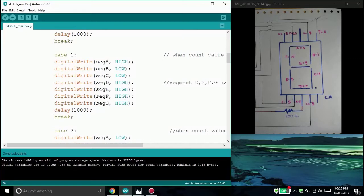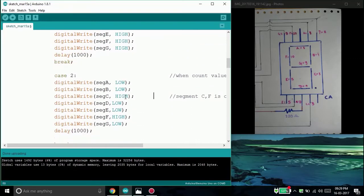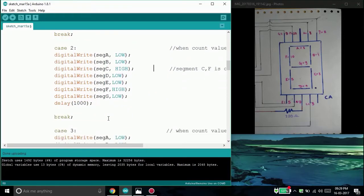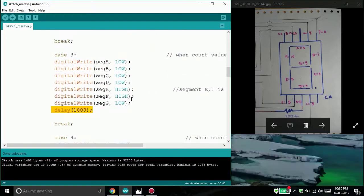For 2, the segment F and segment C will not glow. That's why segment C and segment F is given high. And likewise, the rest of the programming has been done. Now why this delay function is given? This is given so that we can hold the output for 1 second.